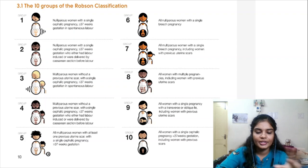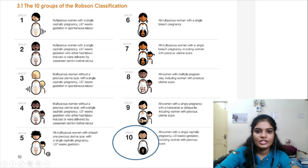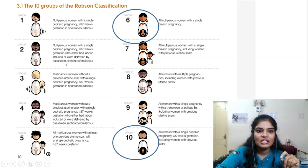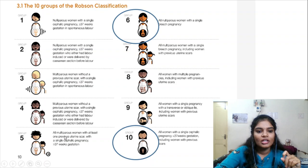Quick revision: Group 10 — less than 37 weeks. Group 6 — nulliparous breech. Group 7 — multiparous breech. Group 8 — multiple pregnancy. Group 9 — transverse or oblique lie. Group 1 — ≥37 weeks, nulliparous, spontaneous. Group 2 — nulliparous, induced or caesarean. Group 3 — multiparous, spontaneous. Group 4 — multiparous, induced or caesarean. Group 5 — multiparous with previous uterine scar (previous caesarean section).